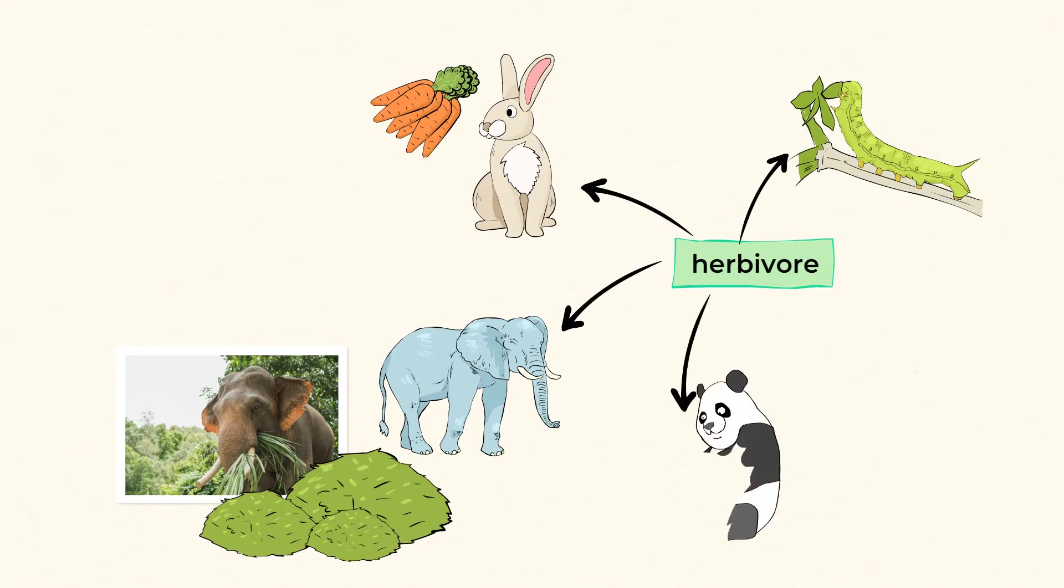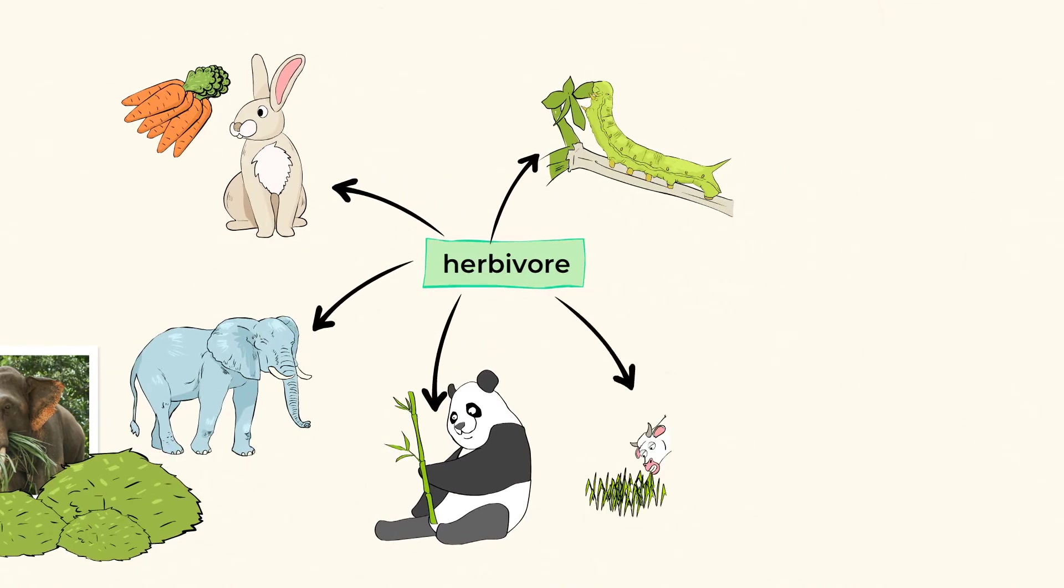Other examples of herbivores are pandas, cows, rhinos, and many more.